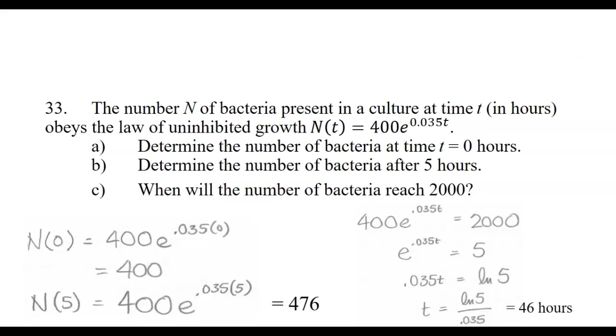Last question, when will the number of bacteria reach 2000? When means what time, what t will make N be 2000. So we're putting 2000 in for N and solving for t. I do that by first dividing both sides by 400, that gives me e to the 0.035t equals five.